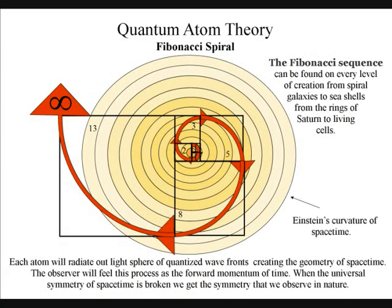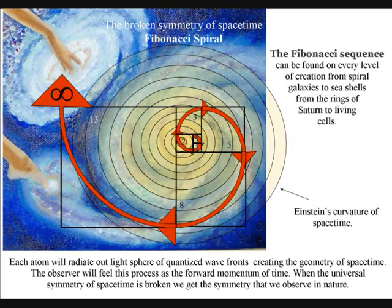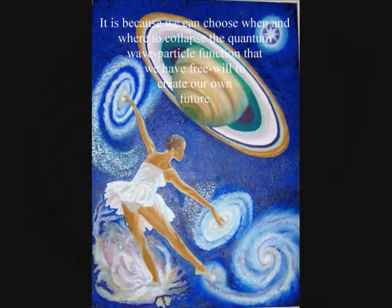The mathematics of the golden ratio and the Fibonacci sequence are intimately interconnected. The Fibonacci sequence can be found on every level of creation, from spiral galaxies to seashells, from the rings of Saturn to living cells.